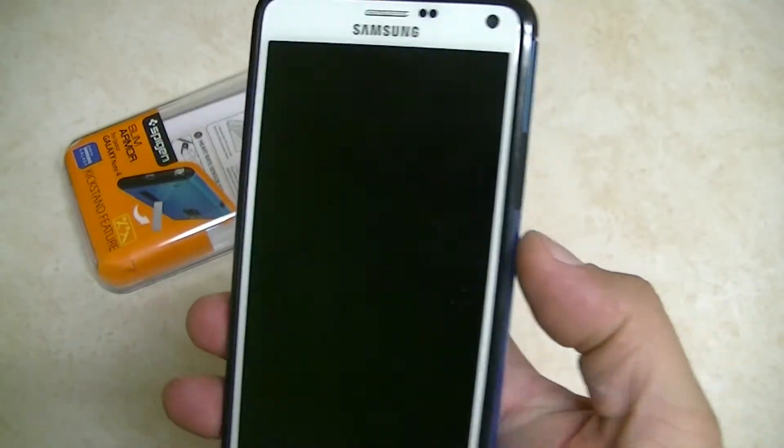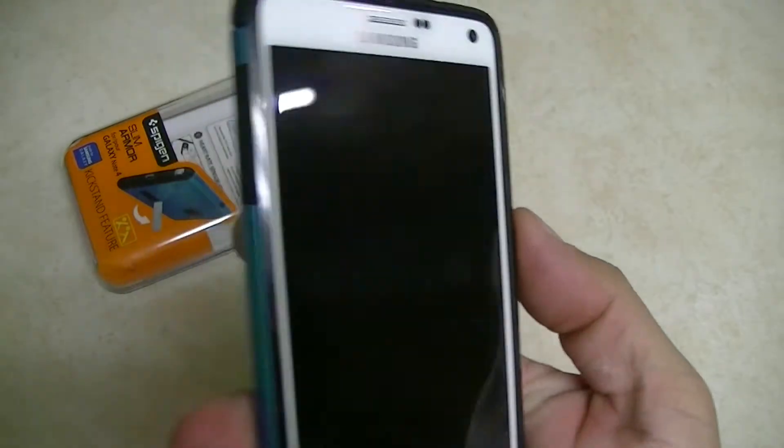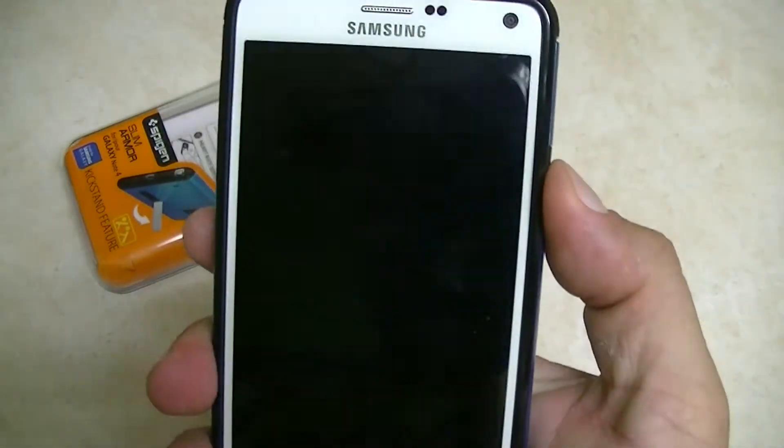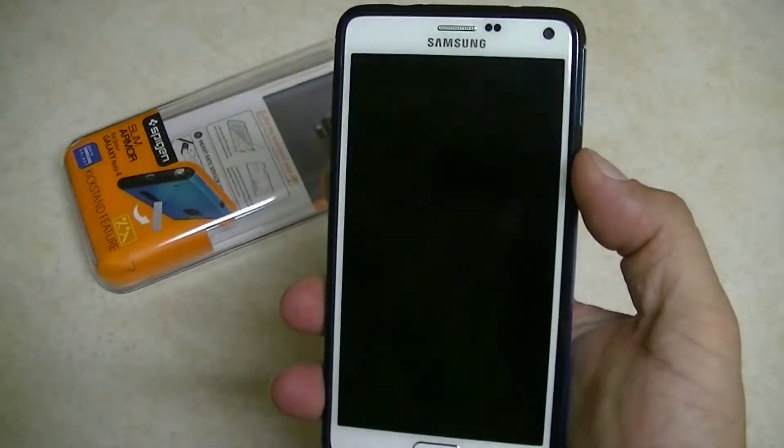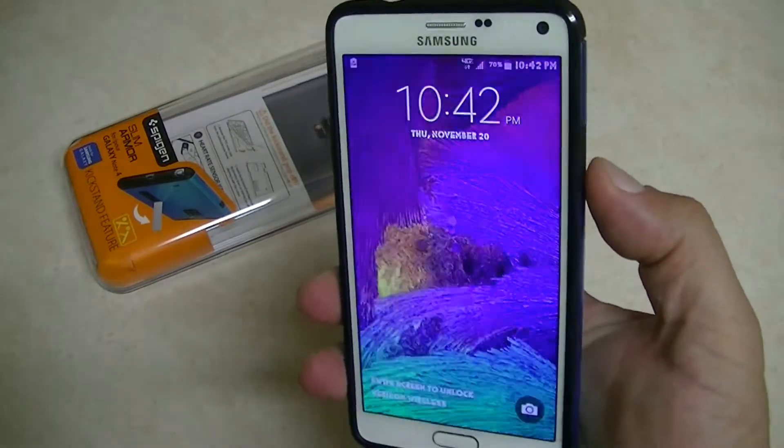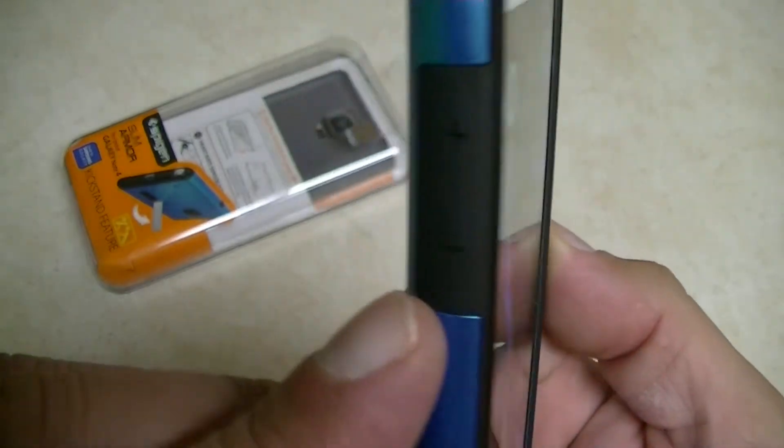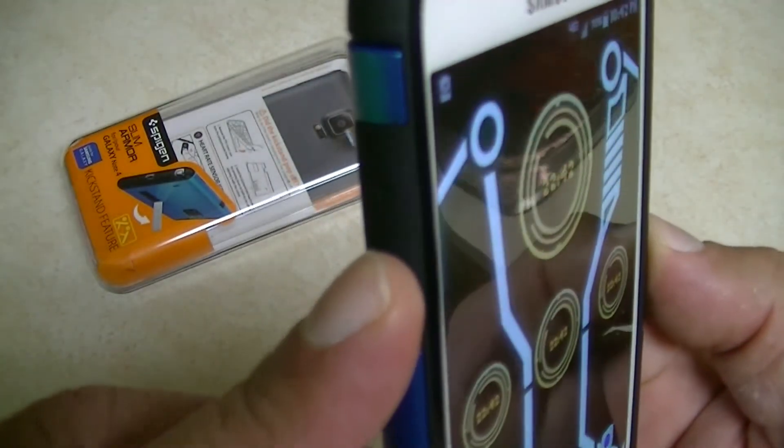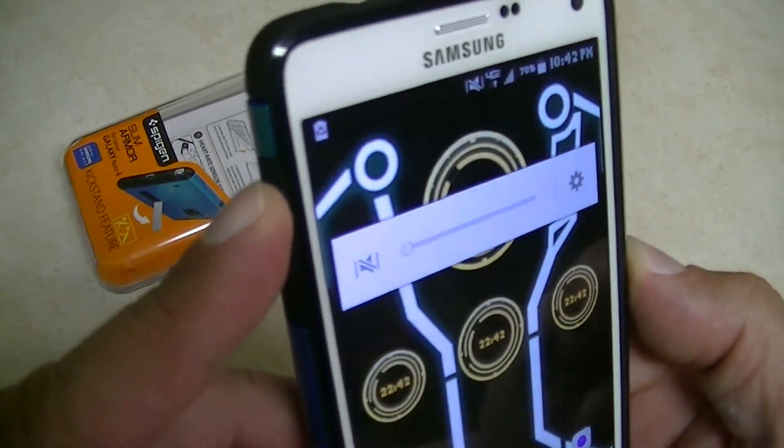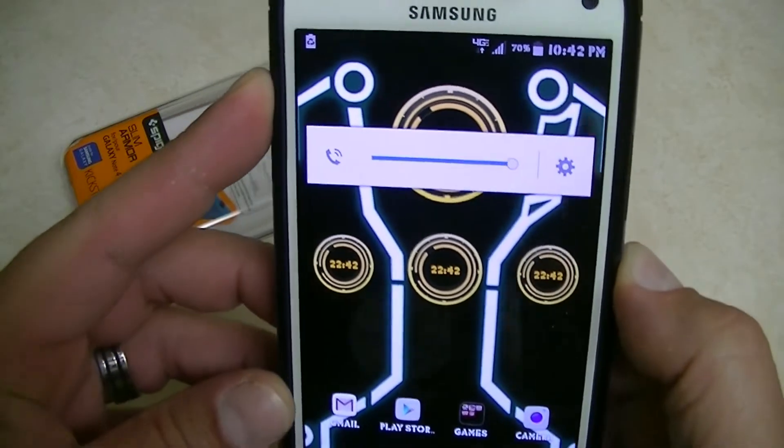So let's go ahead and test the power button and the volume rocker. Here's the access to the power button. Very responsive. Access here to the volume rocker. It works out pretty good.